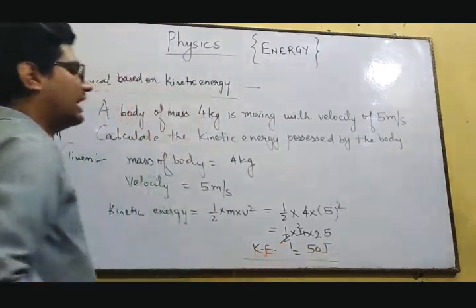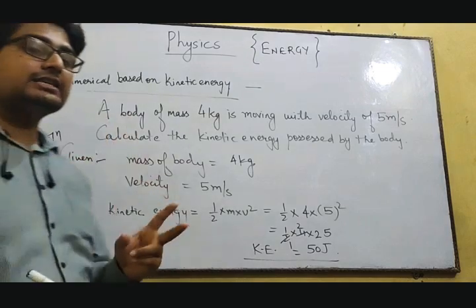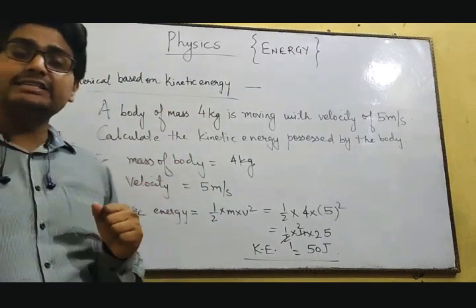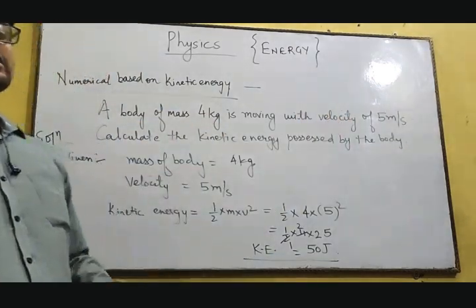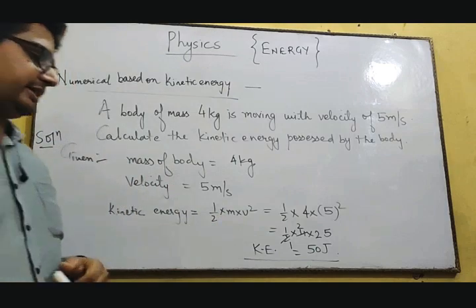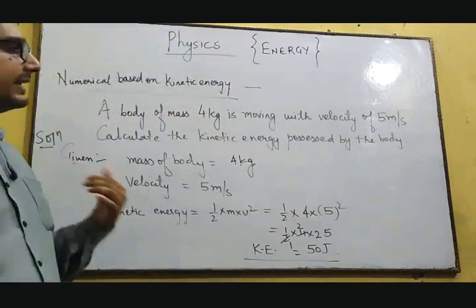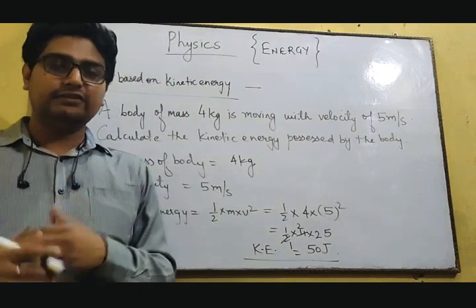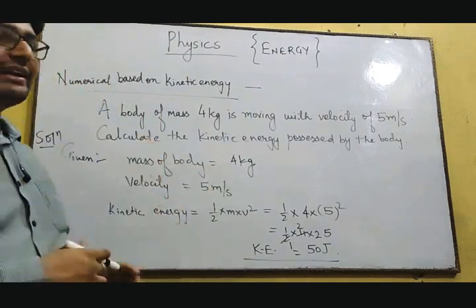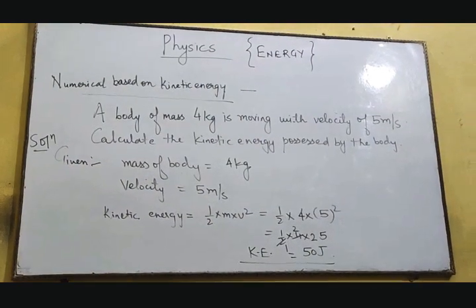This is how you find out the kinetic energy of a moving body. Two things are very important to look for in the question: first is the mass, and second is the velocity. Then you can calculate the kinetic energy of the moving object. After this, we are going to begin with different forms of energy other than mechanical energy.